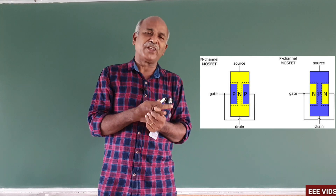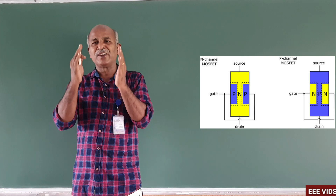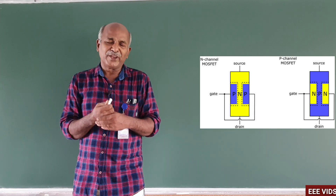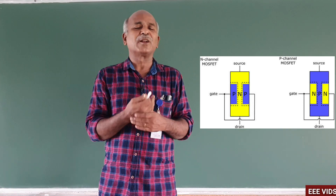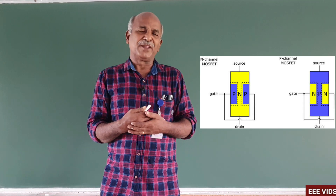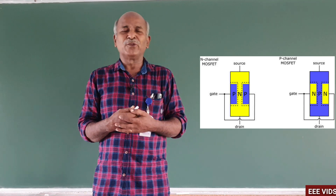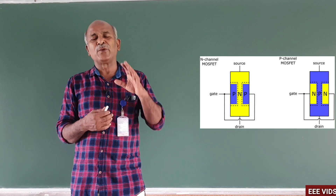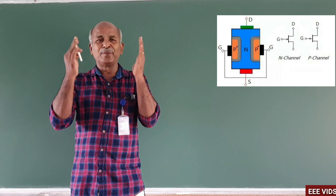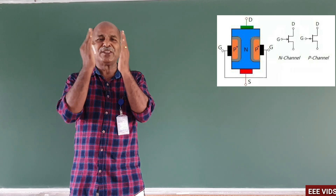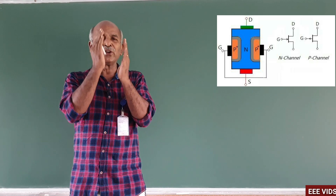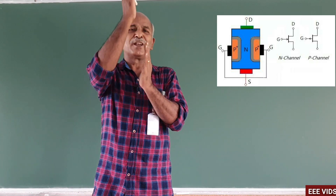The gate voltage varies, and depending on that, the depletion layer width increases or decreases. Based on the drain-to-source current, we can control the field effect transistor. When a negative gate-to-source voltage is applied and increased, the depletion layer width increases, making the drain-to-source path very narrow, and the current becomes smaller.